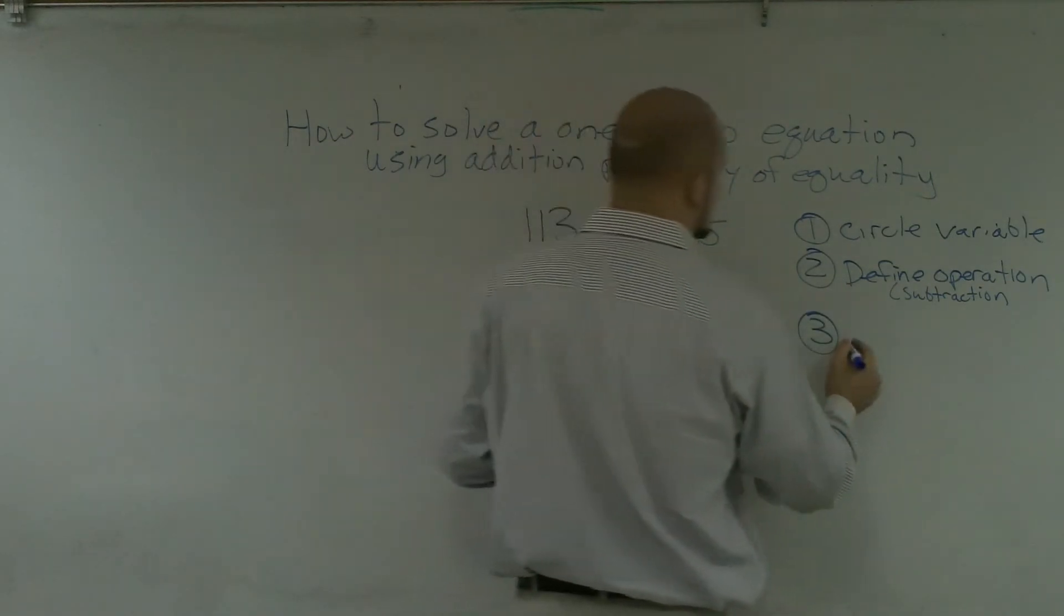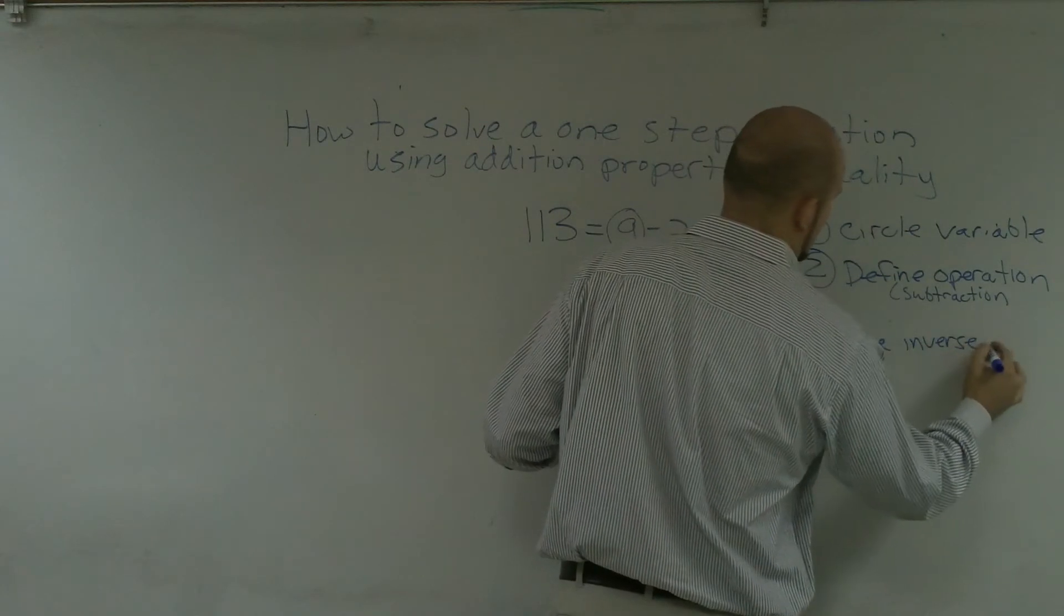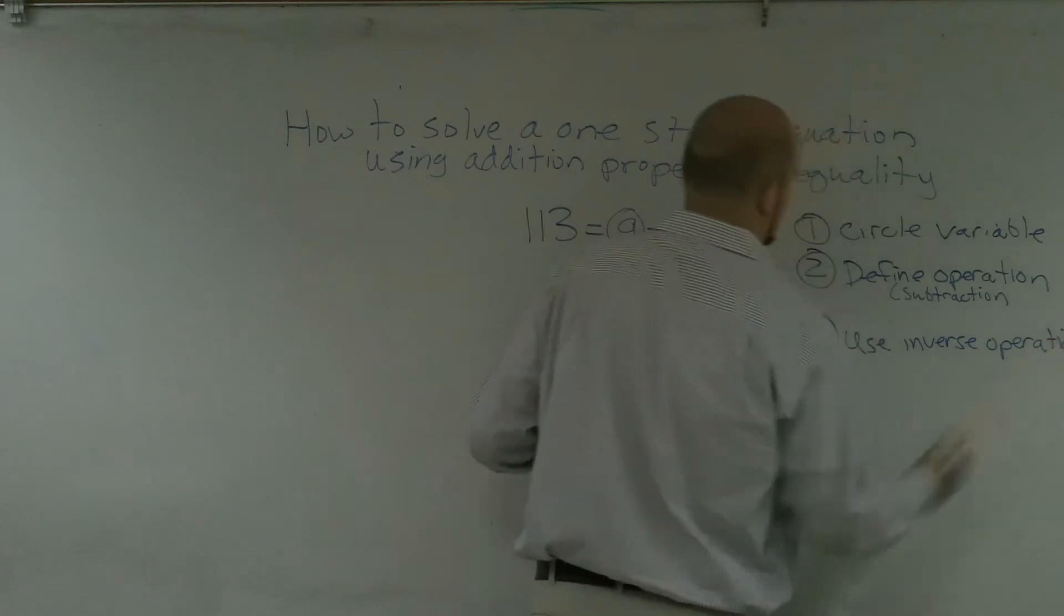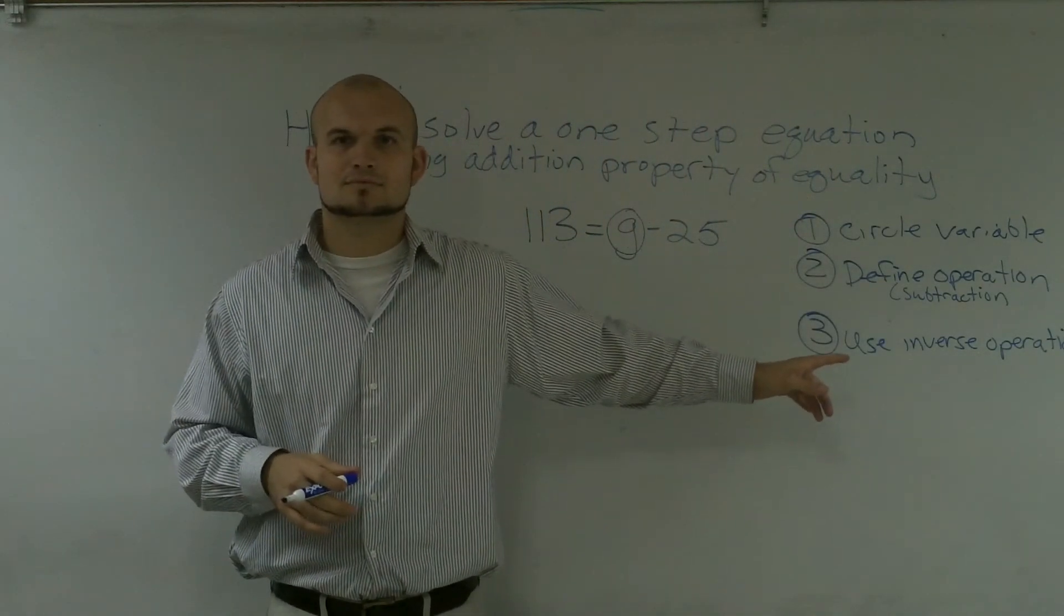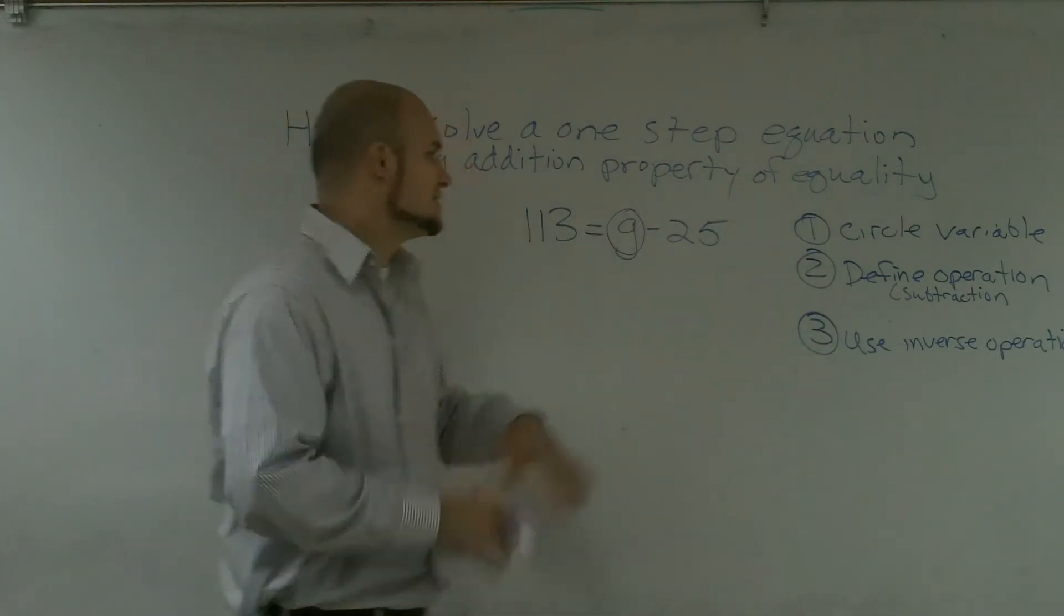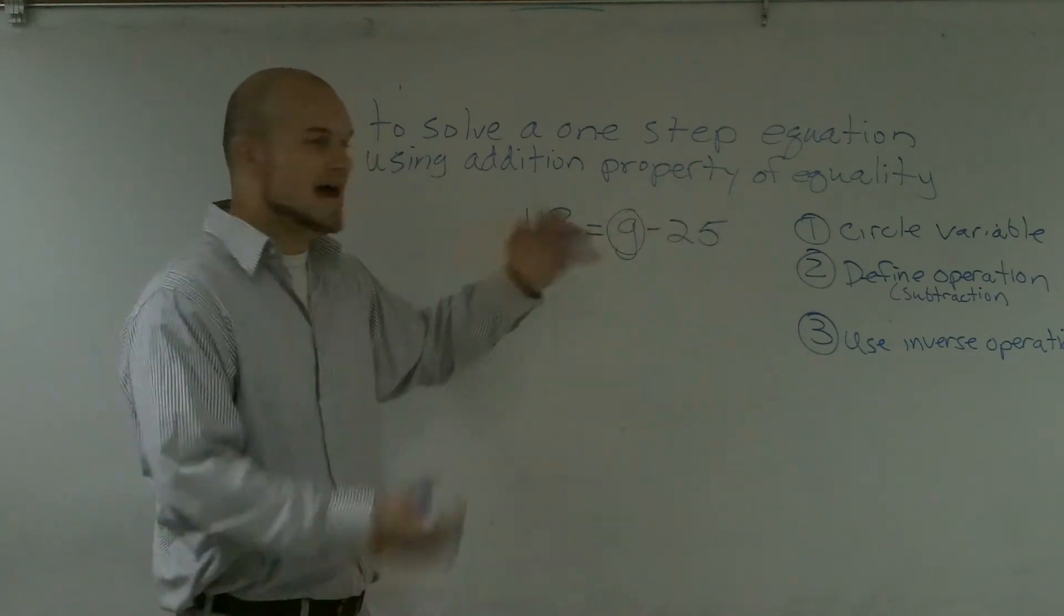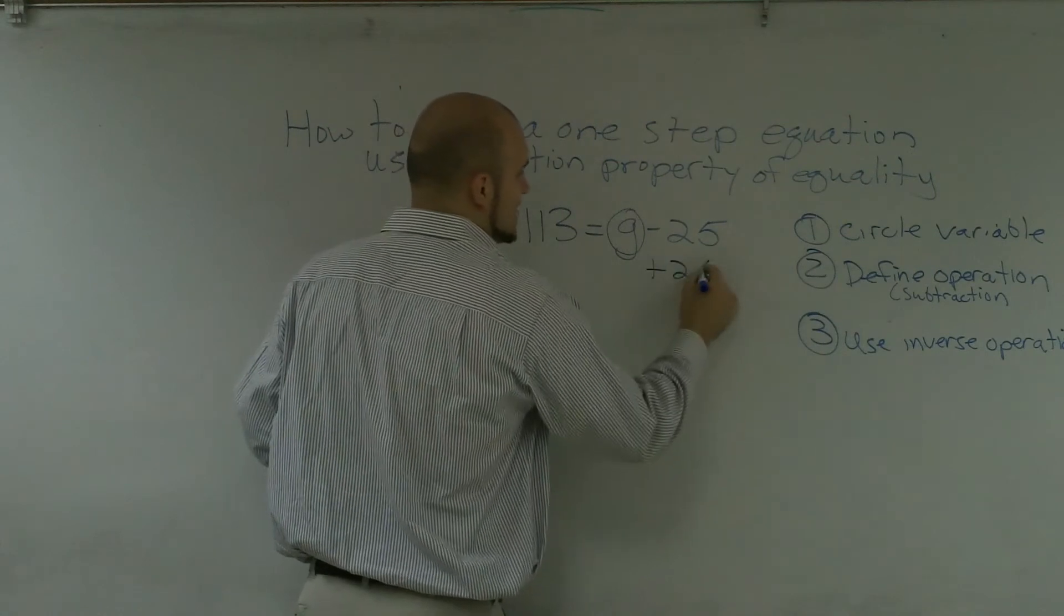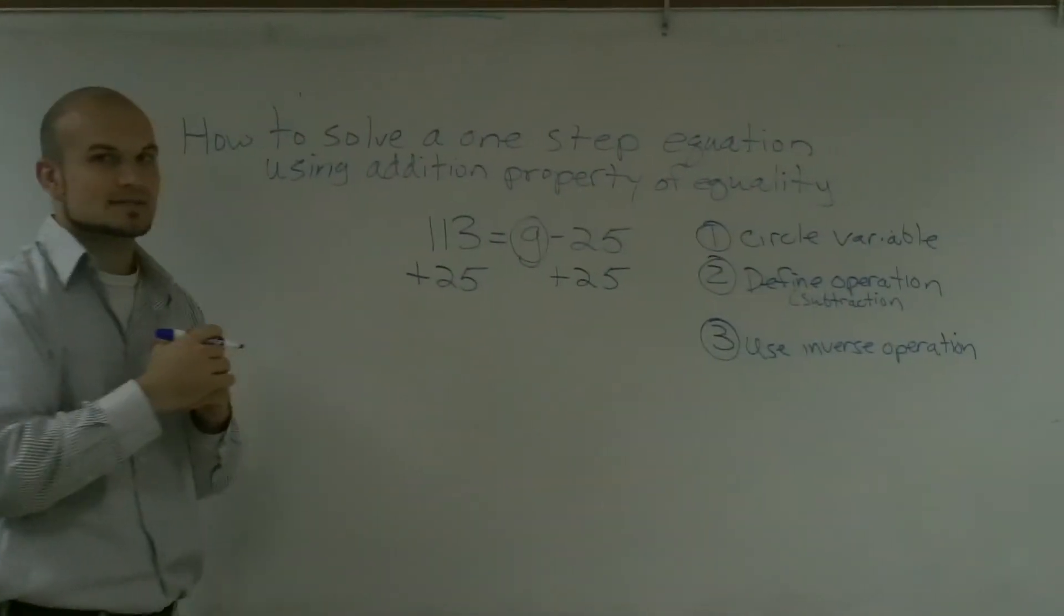Now knowing my addition property of equality, I can add 25 to both sides. So now we need to use the inverse operation. The inverse operation of subtraction is going to be addition. Now knowing my addition property of equality, I can add 25 to both sides, and my equation will still remain mathematically correct.